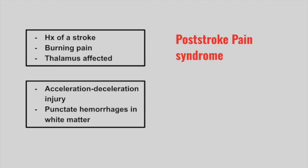Next is a patient with an acceleration and deceleration injury with punctate hemorrhages in white matter. This is diffuse axonal injury. Typically, shearing of white matter tracts is mentioned.